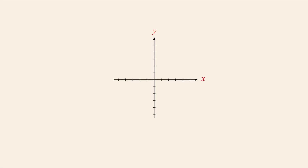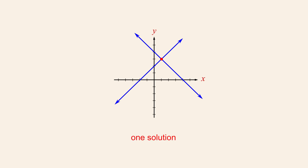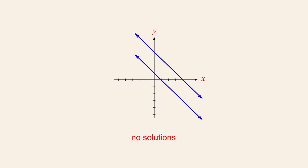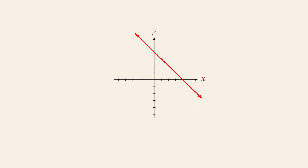We saw that systems of two linear equations in two variables can have three types of solution sets depending upon the ways in which the lines are oriented in the Cartesian plane. If the lines have different slopes, then they must intersect at a single point and the system will have a single, unique solution. If the lines are distinct and parallel, then there are no points of intersection and the system has no solutions. And if the lines are identical, the two graphs coincide, intersecting at an infinite number of points — the system therefore has an infinite number of solutions.